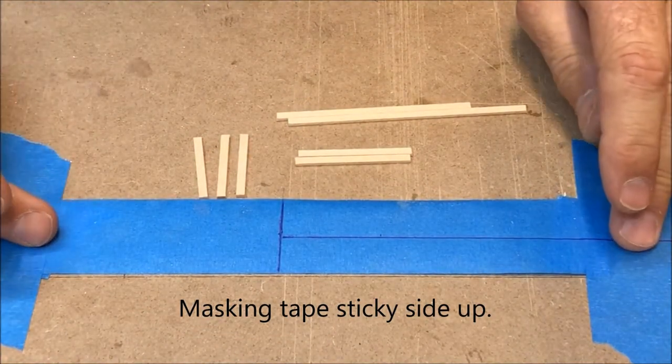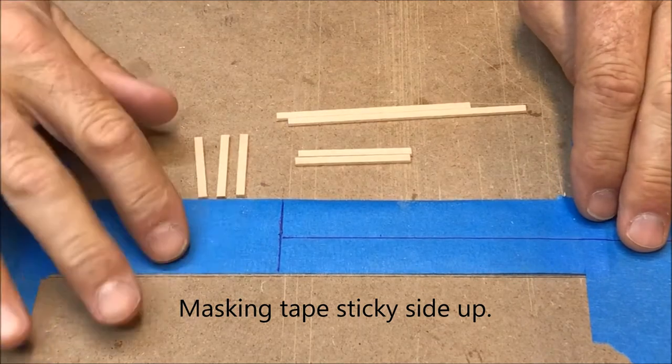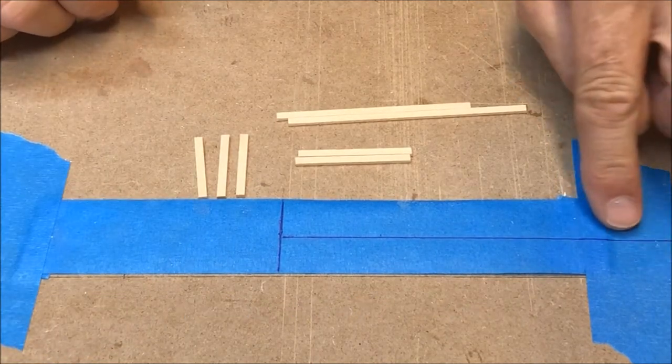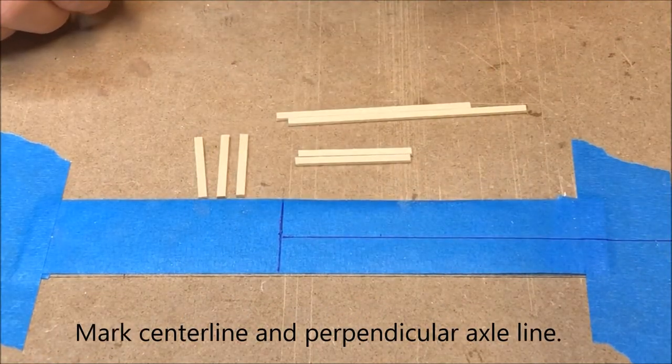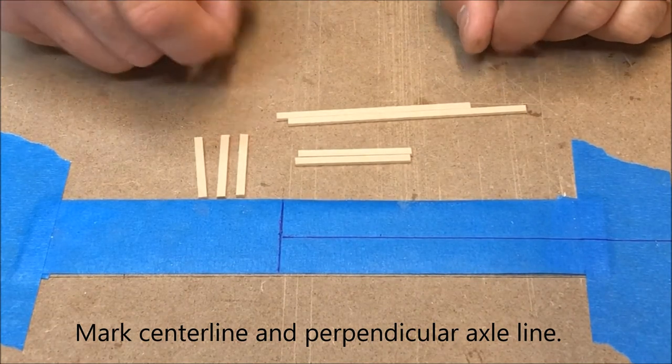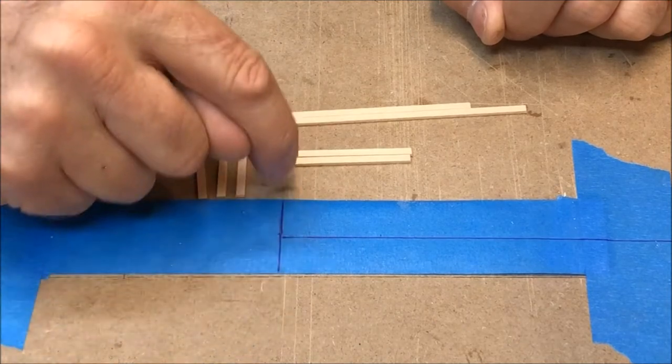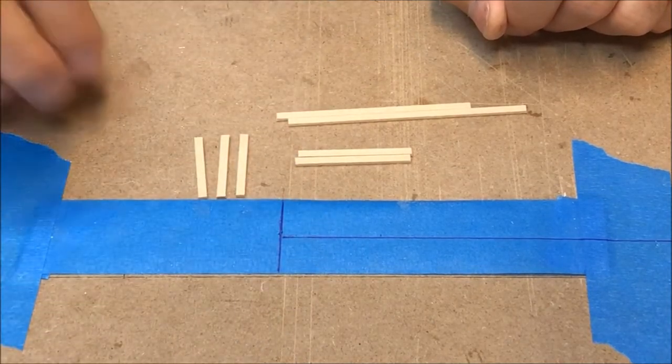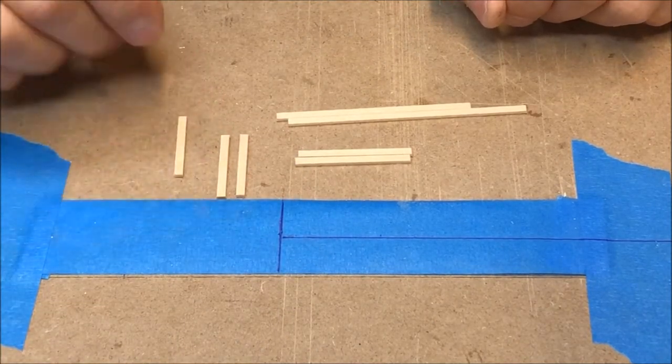I've put a piece of painter's tape upside down so the adhesive side is up and I've drawn a straight line down the middle. That represents the draw bar of our wagon and it has a square line at the end of it and that represents where our axle is going to go.